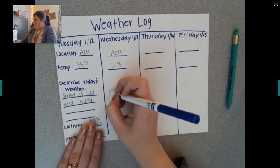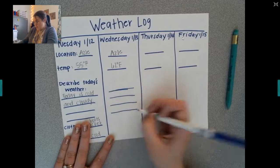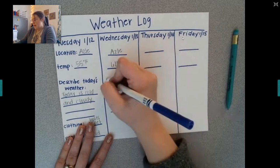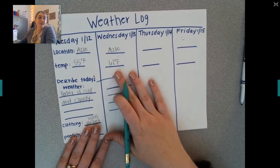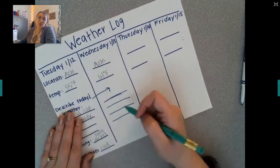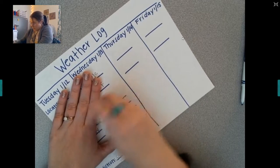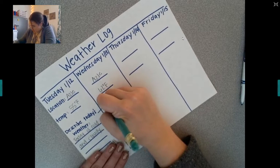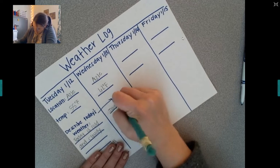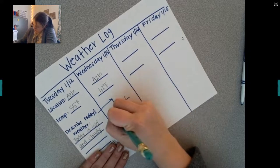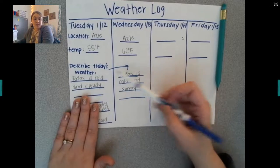I want you to write down on the lines right here. If you've been outside — if you haven't, you might want to step outside. I want you to describe today's weather on those lines. So I'm going to describe today's weather however I want. I'm going to say cold and sunny. However you think it is today, write how you think today's weather is.